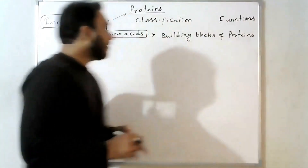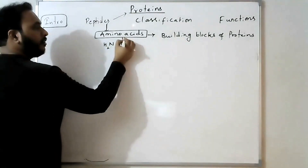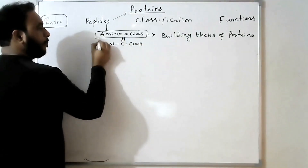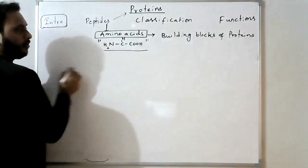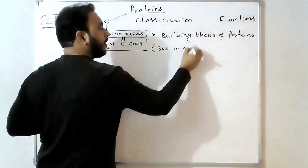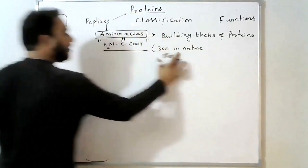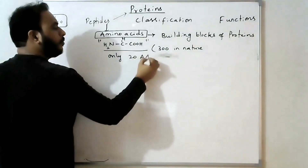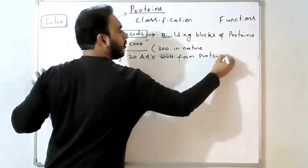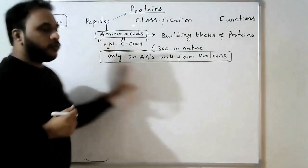The basic structure of amino acids is NH2-CH-COOH. There are generally 300 amino acids in nature, but only 20 amino acids will form proteins. Those 20 amino acids are what we need to remember.